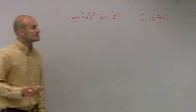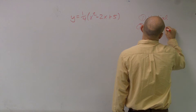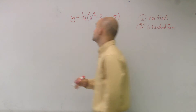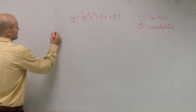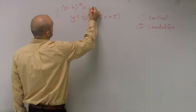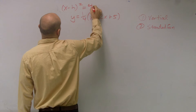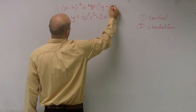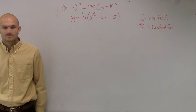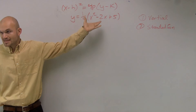The next thing we need to do is write it in standard form. This does not look like it's in standard form. To write it in our standard form, we have x minus h squared equals 4p times y minus k. So we just determined what it is — vertical or horizontal — then you apply the formula.